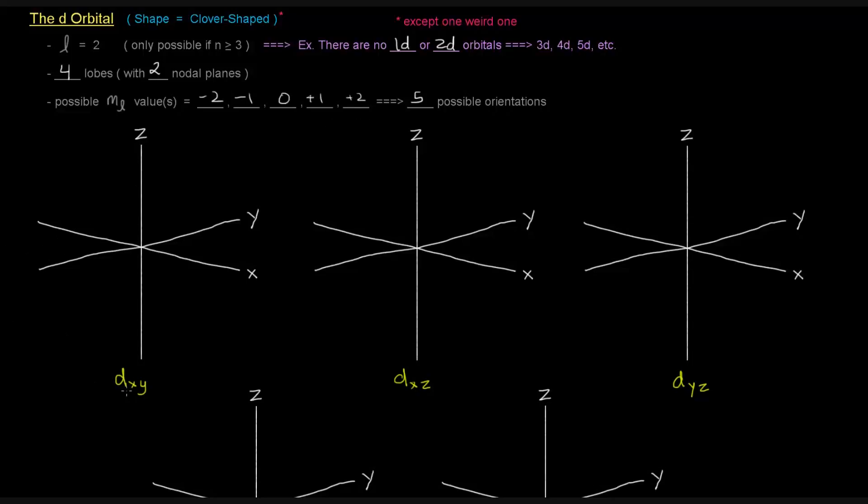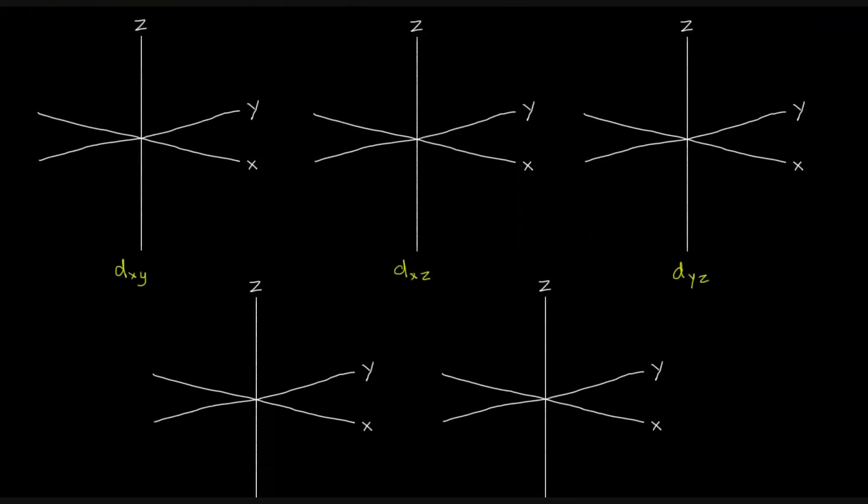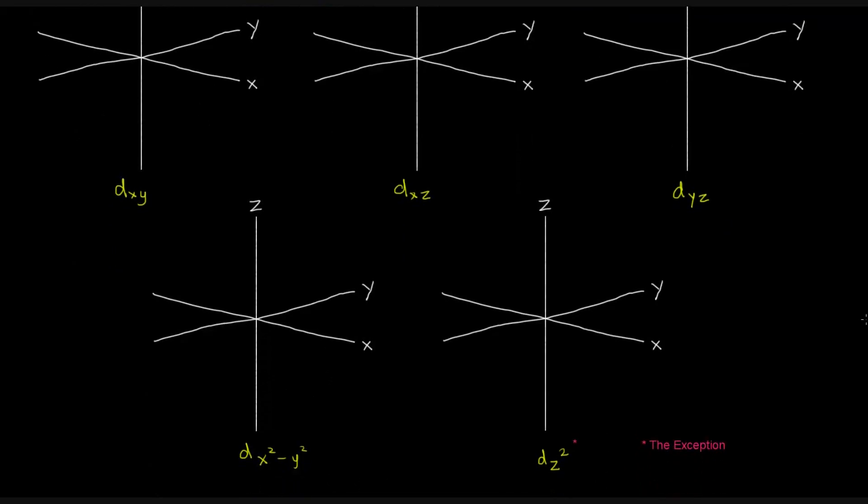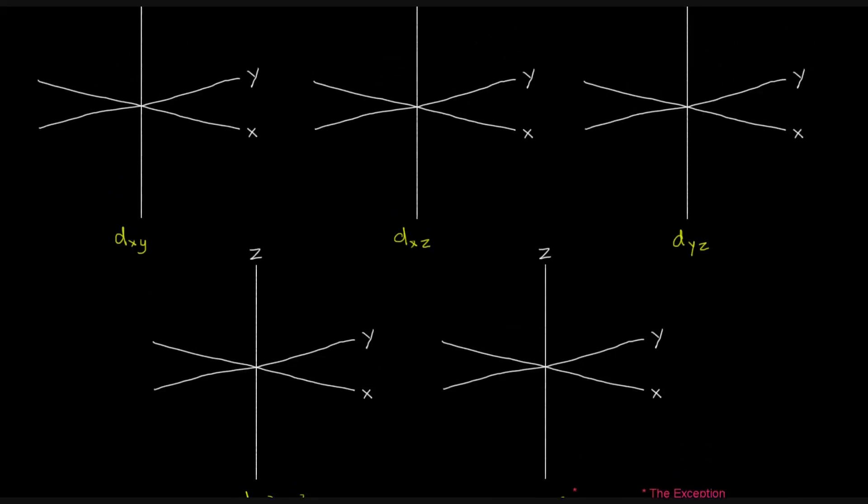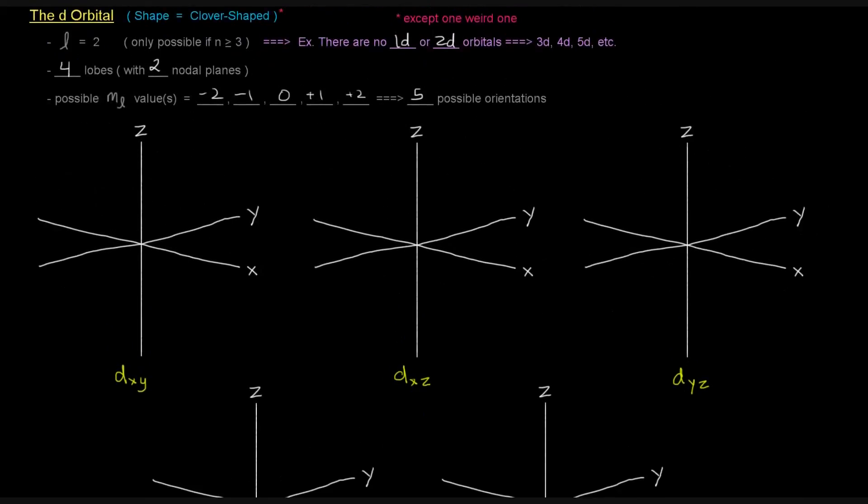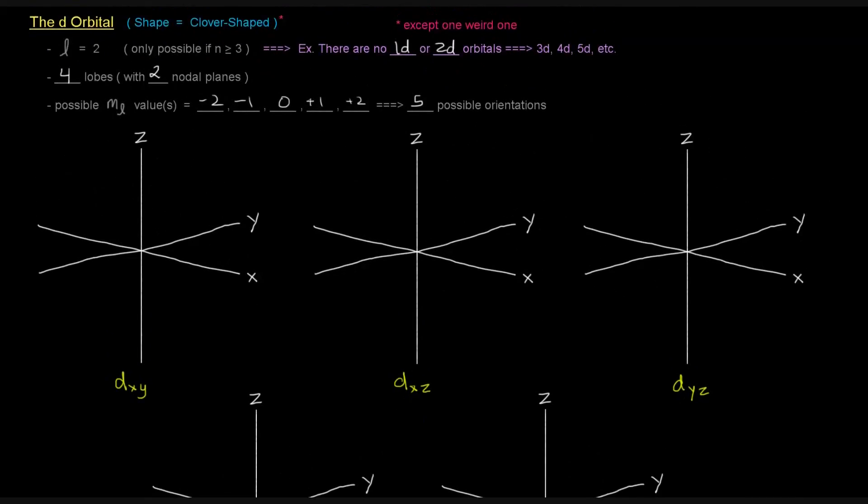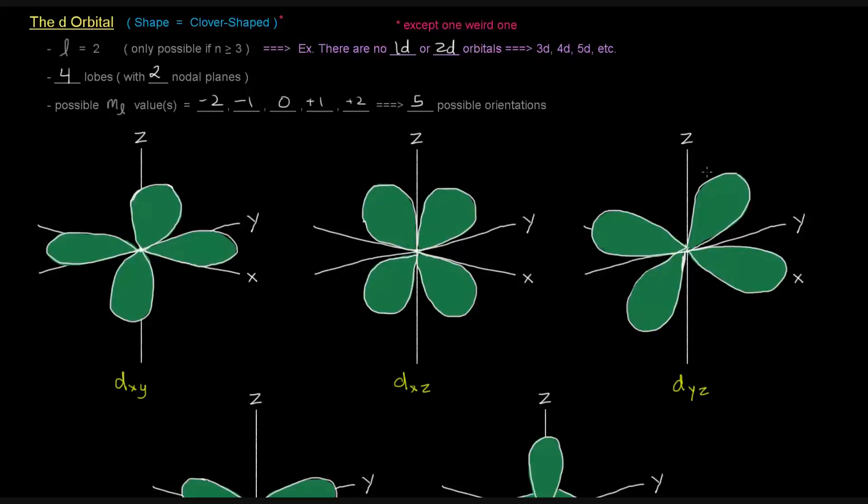There's going to be a dxy orbital, a dxz, and a dyz orbital, and there's going to be a dx squared, y squared orbital, and a dz squared orbital. So those are the five different orientations, and they look kind of like this, little clover shapes.